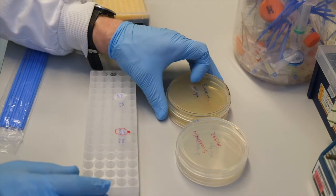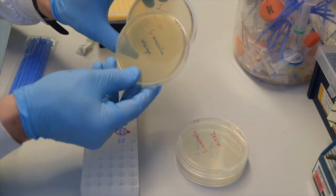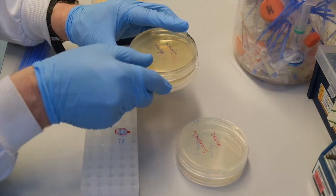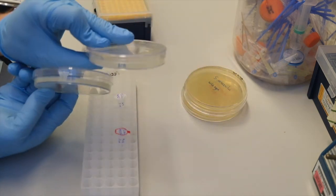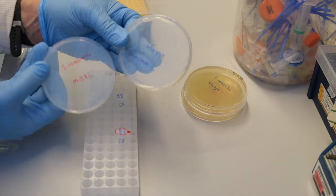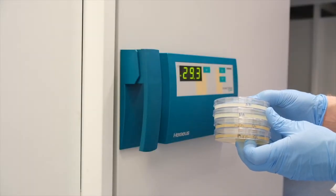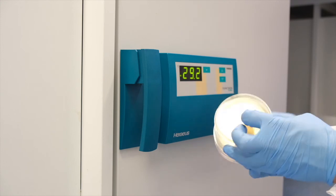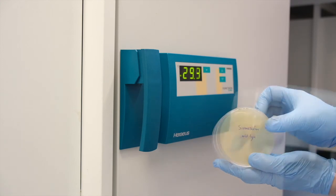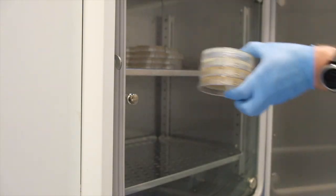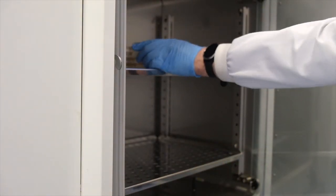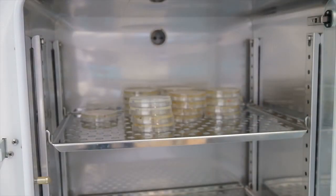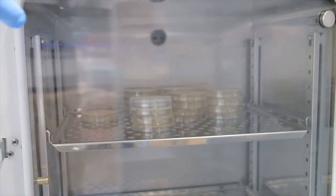We have now spread both strains of Streptomyces venezueli on MYM plates to sporulate and streaked both strains on nutrient agar plates to form single colonies. All plates will be incubated at 30 degrees. The MYM plates will be incubated for 5 days to allow the Streptomyces to sporulate. The nutrient agar plates require only 2 days of incubation to form single colonies.